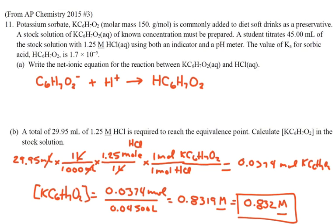Write the net ionic equation for the reaction between potassium sorbate, which is the conjugate base of the weak acid, and HCl. The net ionic equation: we know this is going to break up into K plus and sorbate ion, and HCl breaks up—it's a strong acid—into H plus and Cl minus. We're not going to care about the K or the Cl. So these two ions together just turn into the acid. That's the first part.